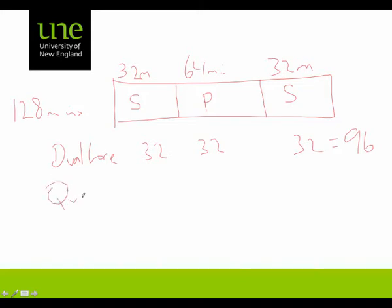Likewise now we go quad-core processor. Same thing, we've got 32 minutes at each end because we can't do much about the sequential part of the code, but we can reduce that by a further factor of 2, a quarter of 64 which is 16 minutes, so now have a total runtime of 80 minutes.